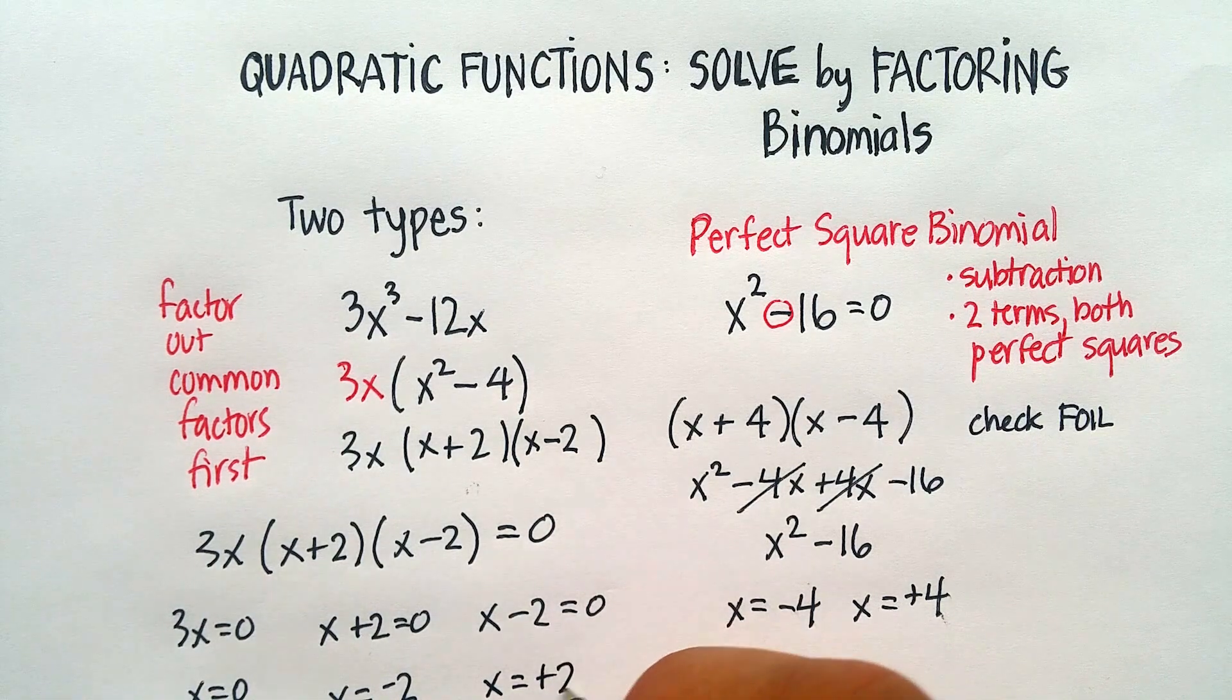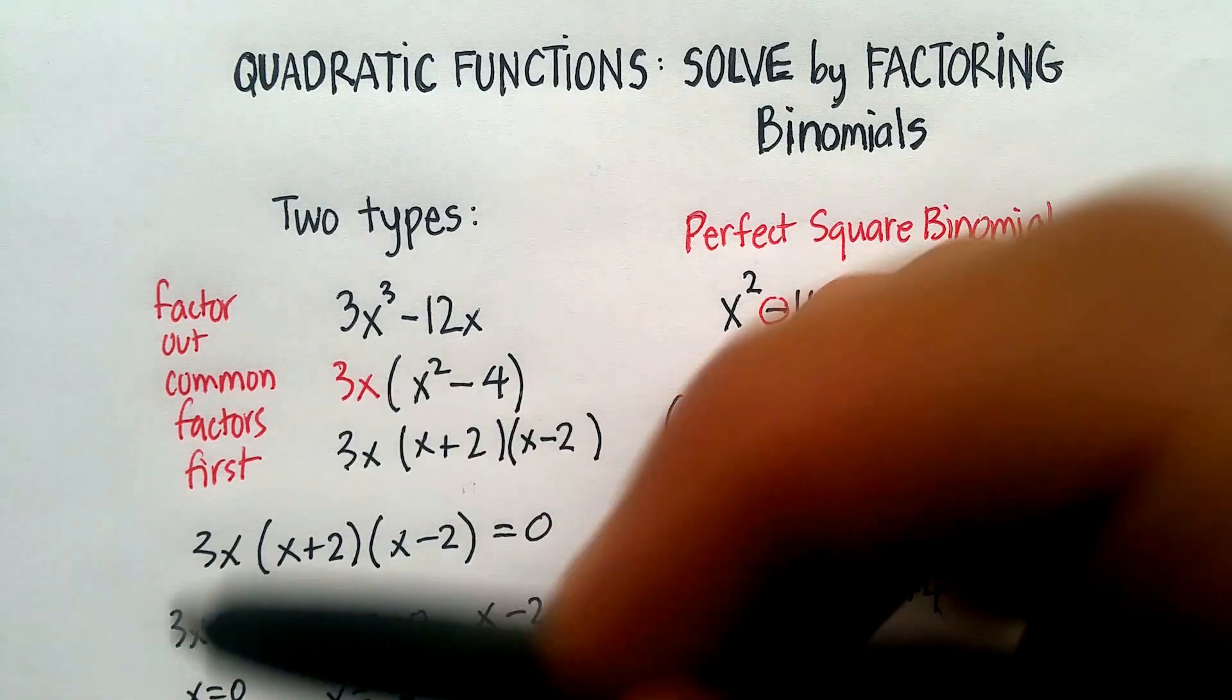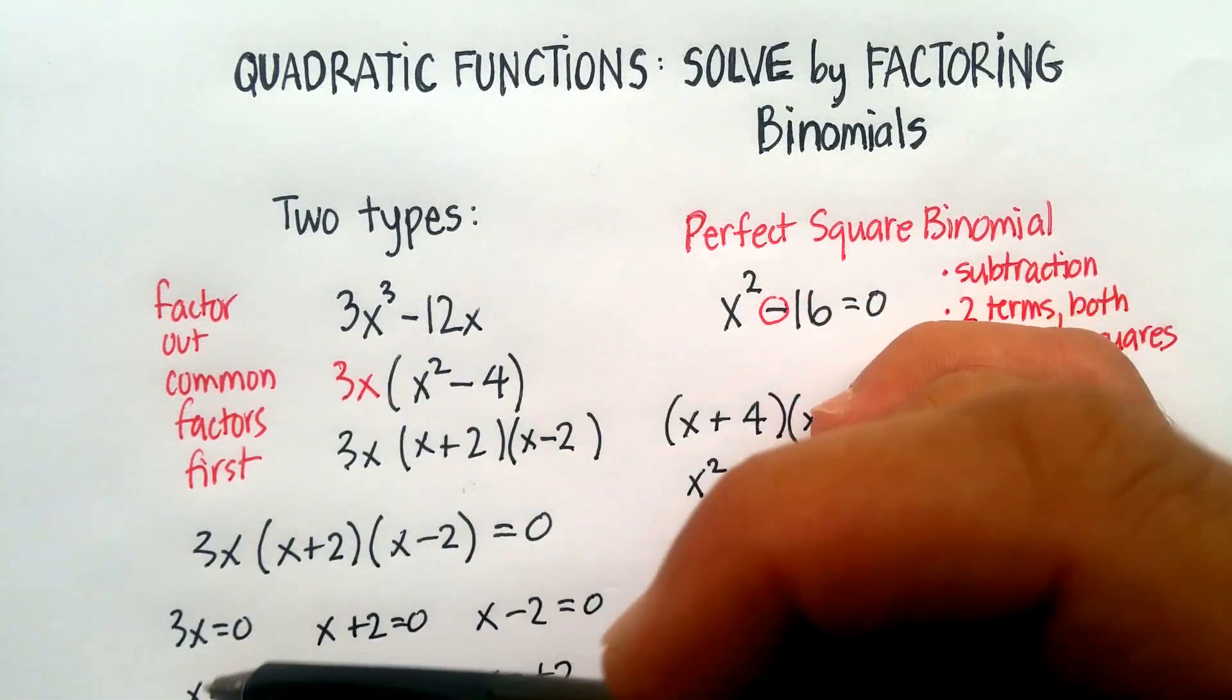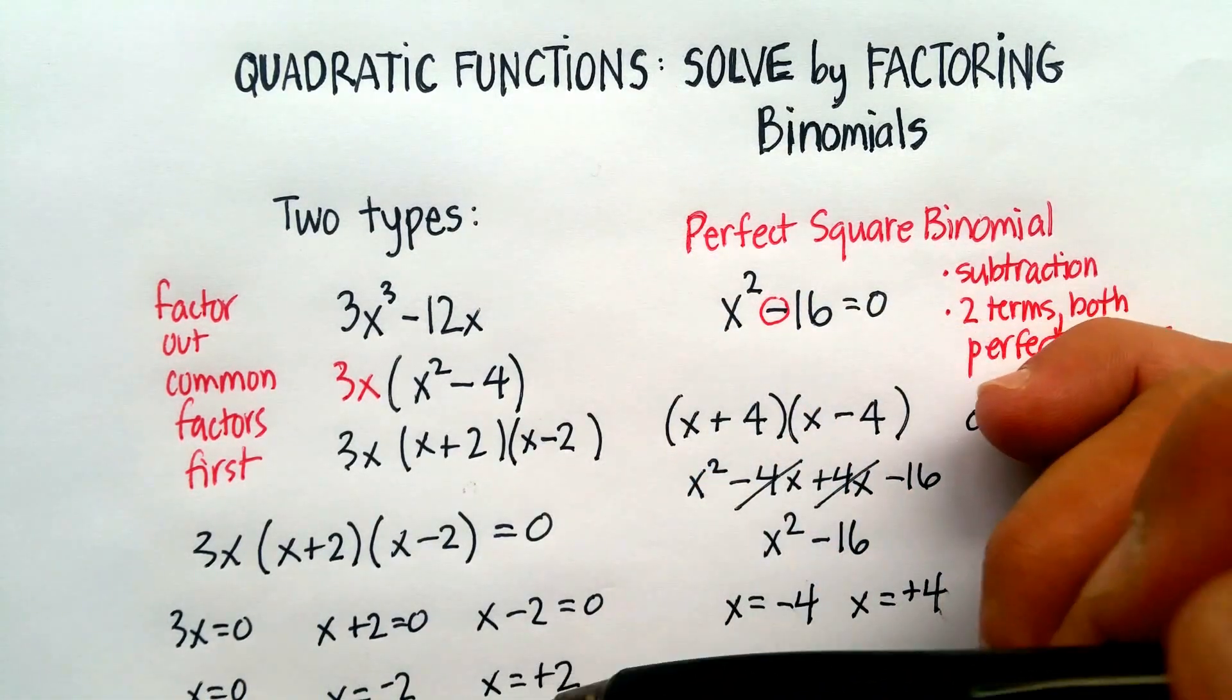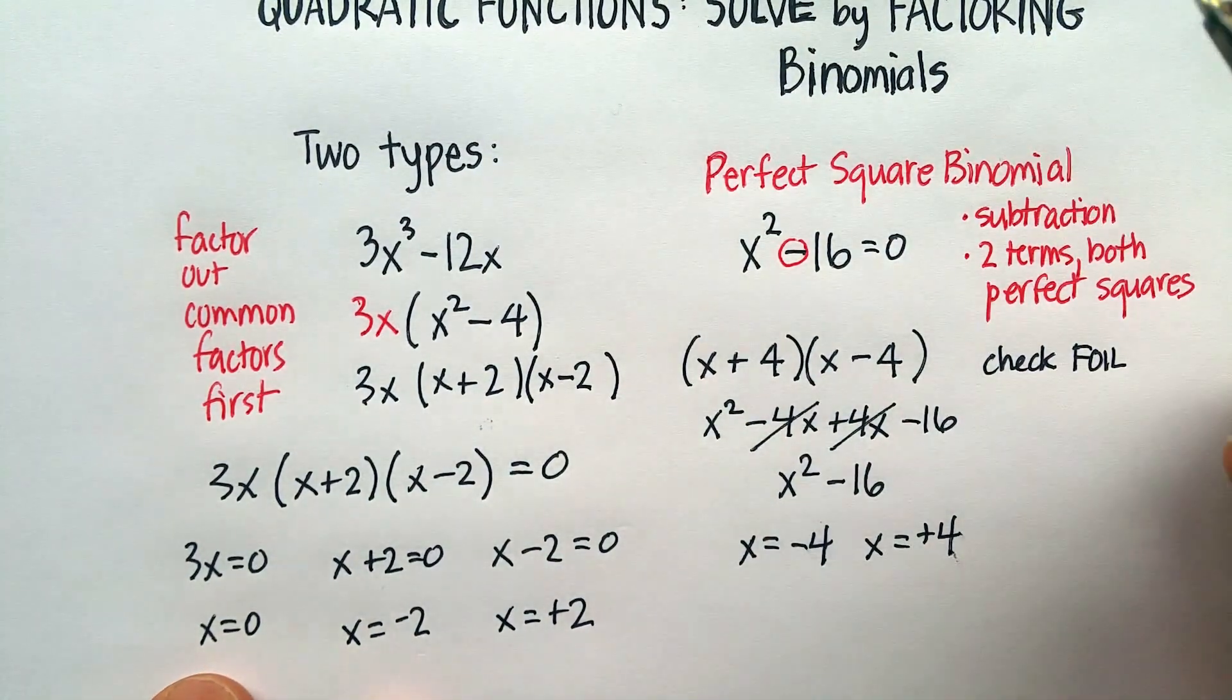So this parabola would actually be like an up and down parabola. You're going to have two of them right next to one another where x is 0, x is -2, and x is +2. I hope that was helpful to you.